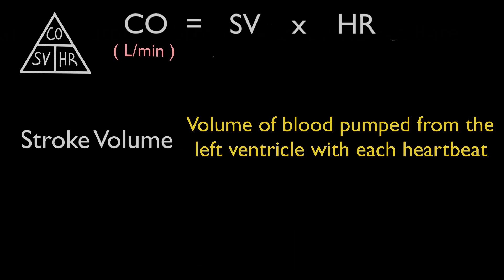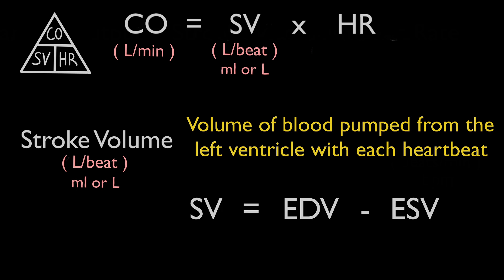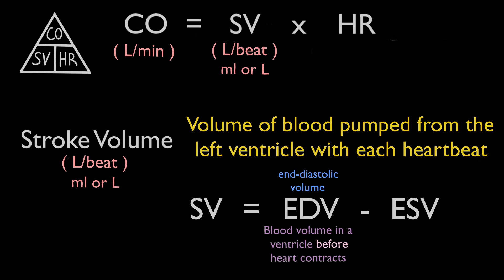Stroke volume is the amount of blood that is pumped out of the heart with each heartbeat. The units are litres per beat, but it is also sometimes expressed in millilitres or litres. Stroke volume can be calculated by subtracting the end diastolic volume — the volume of blood in one ventricle at the end of diastole when the heart has been filled with blood right before contraction — by the end systolic volume, which is the volume of blood that remains inside the heart after a contraction.